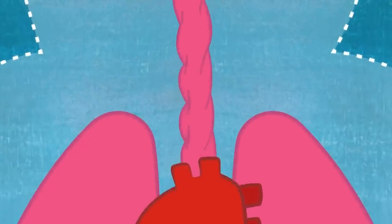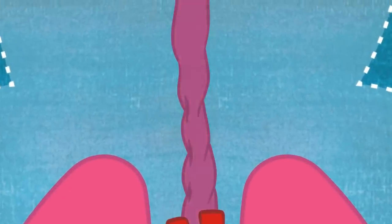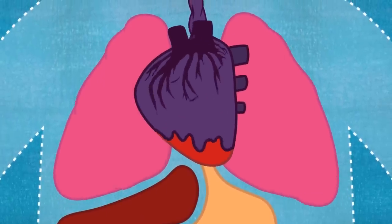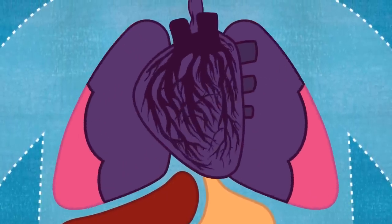First, your trachea tightens, which limits respiratory ability. Your heart enlarges, reducing blood flow. Muscle spasms constrict your lungs within minutes.